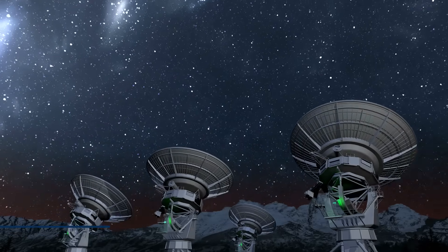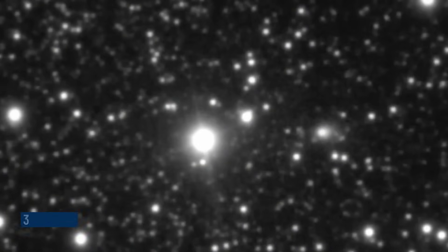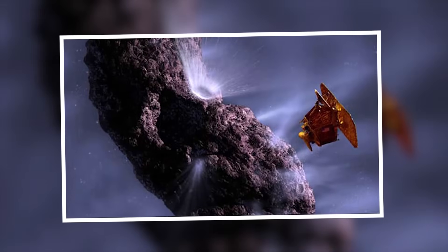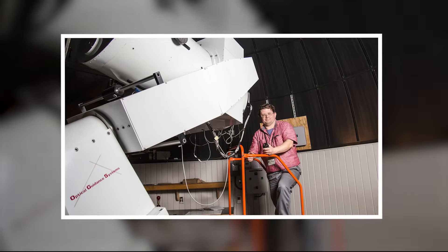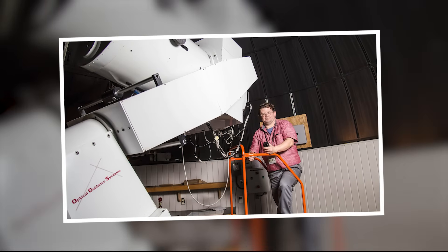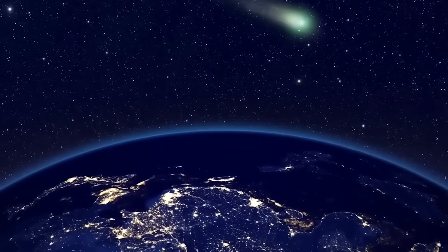A Chinese telescope just captured the clearest image yet of 3i/ATLAS, an object racing through our solar system from another star. But while the world sees a blur of light, some are asking, why is NASA so quiet? What's in this image that space agencies aren't talking about?